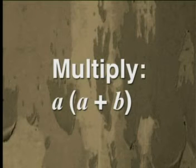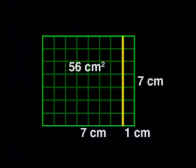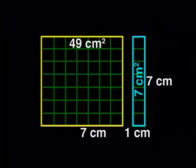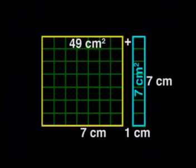Now let's do another example. What do we get when we multiply A by A plus B? To understand what to do here, let's first use numbers to help us multiply. Remember, A and B represent numbers. Think of A as 7 and A plus B as 8, because we know their product gives us 56. So if A is 7, surely B must be 1. That means here we have 7 times 7, which is 49 cm², and 1 times 7, which is 7 cm². And to get the final answer, we add 49 and 7, and the answer is 56.